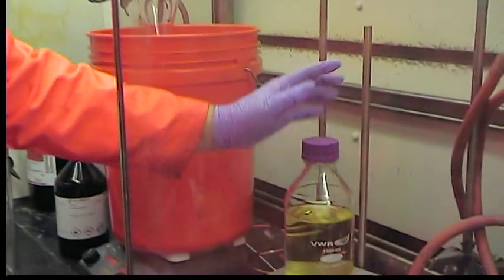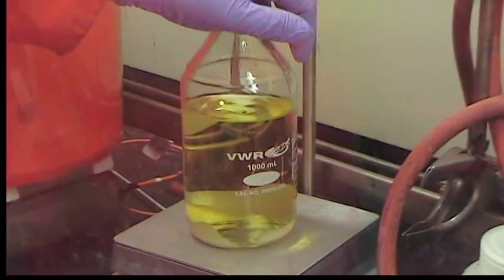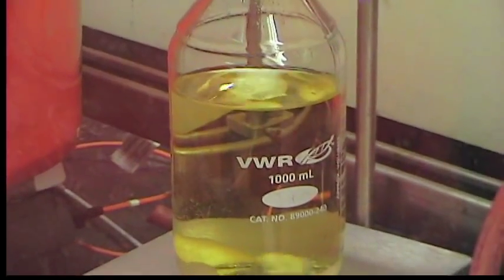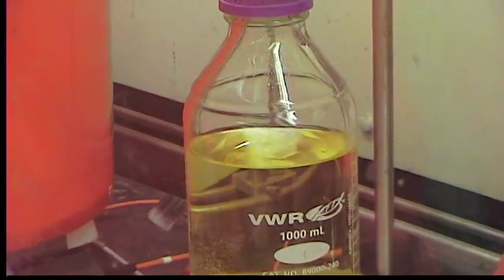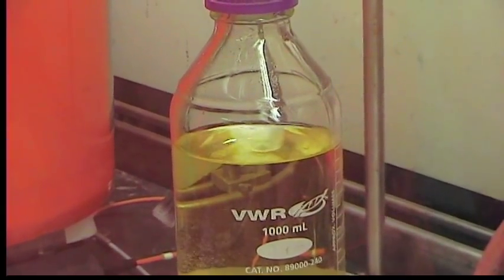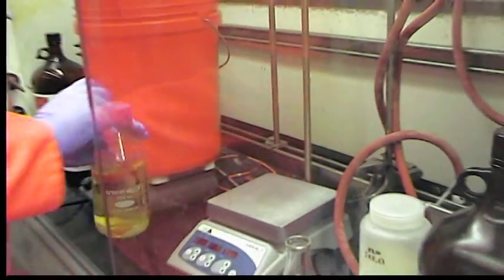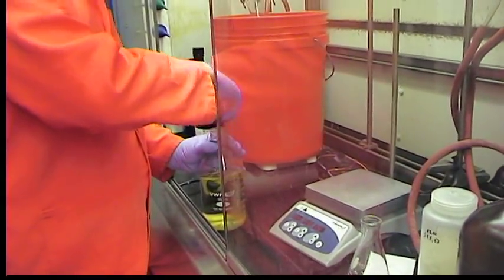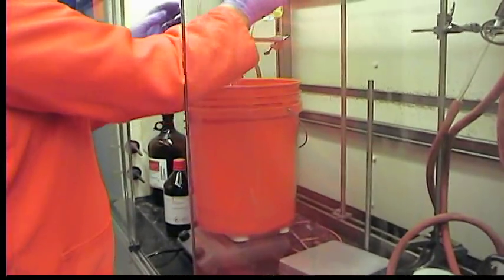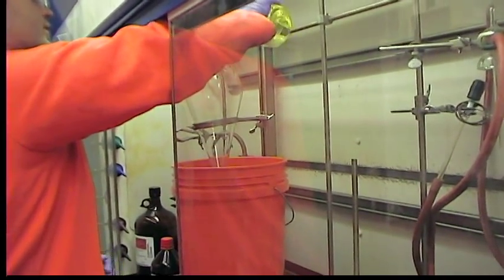We're not going to add the pyrylium salt directly, we're going to add it very slowly. Here on this stir plate I have the pyrylium salt stirring in acetonitrile. We're going to prepare saturated solutions of this, and these saturated solutions we're going to add them slowly to the amine acetonitrile solution.